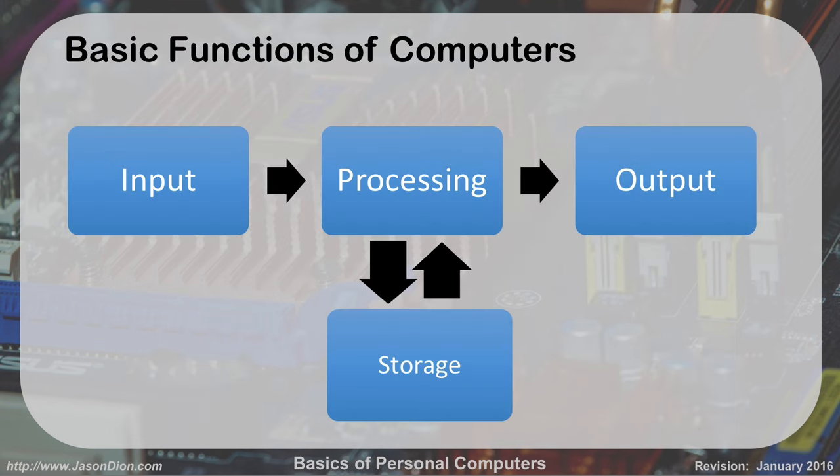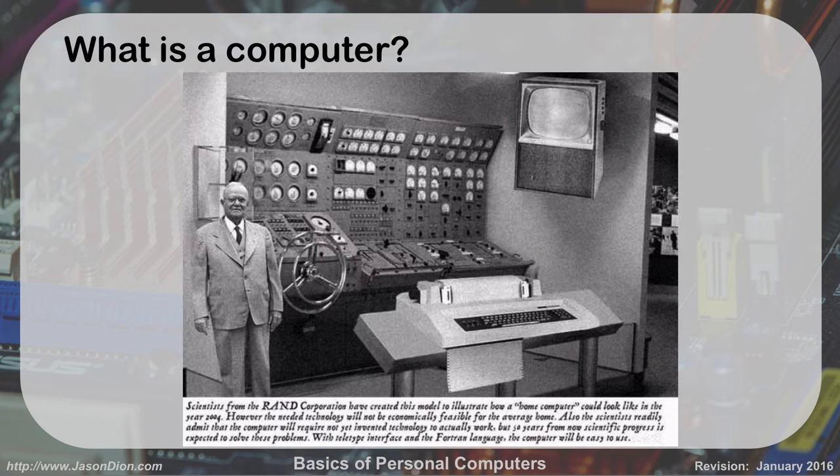Our basic steps: we have input, we do some processing, those go to and from storage — whether that's in memory or to a hard drive — and then output goes to a screen or to a printer. In the old days, we had these big rooms filled with computers that didn't have screens. They came out as printed output.